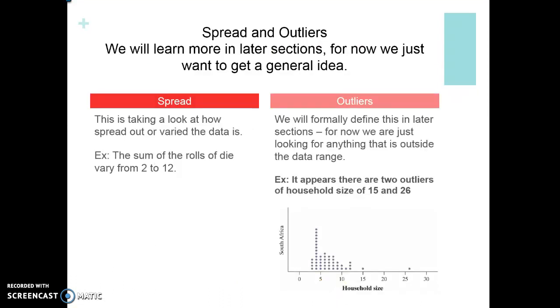Spread and outliers - we're going to learn a little bit more about this in later sections but we just want to get a general idea of what the spread looks like. Spread is taking a look at how spread out or how varied the data is. If we take a look at the sums of the rolls of a dice they vary from 2 to 12. Our spread is the rolls of the dice, the sum varies from 2 to 12.